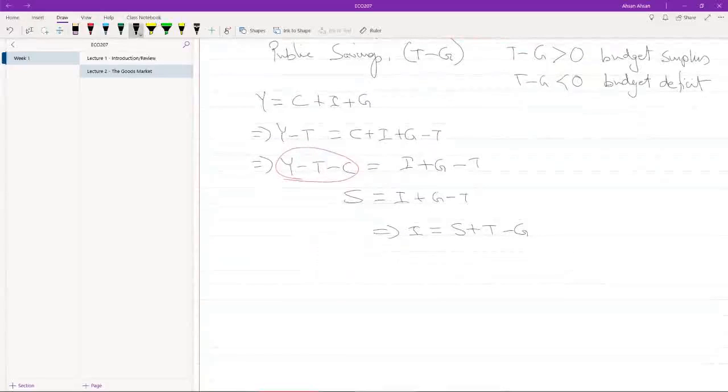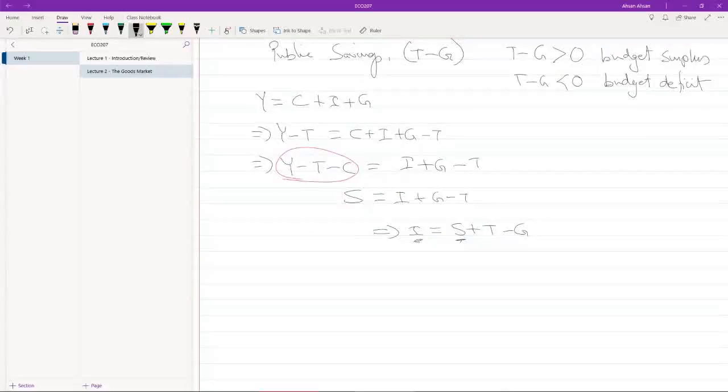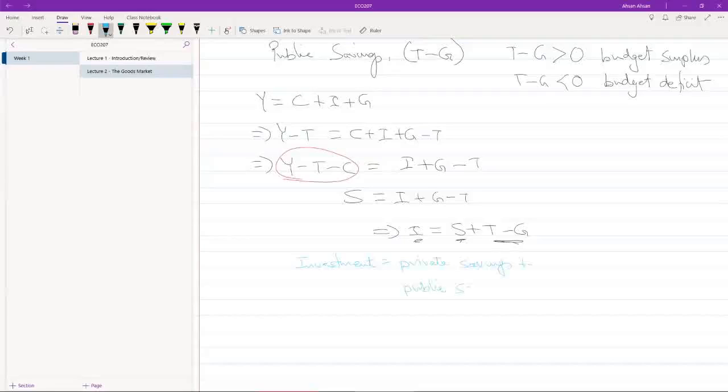Now what does that tell us? I is investment, S is private savings, T minus G is public savings.